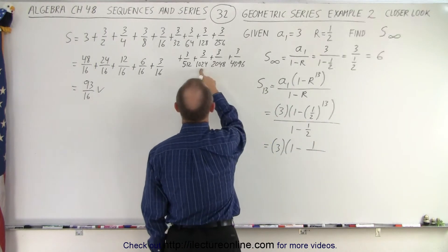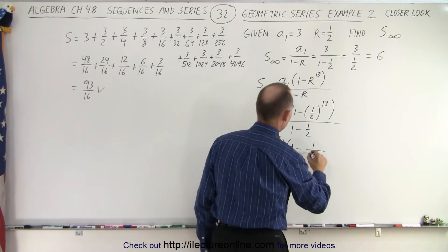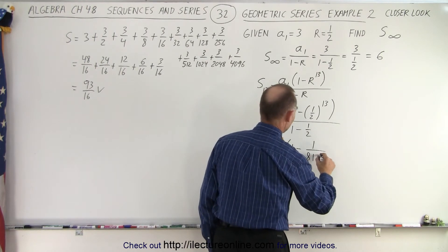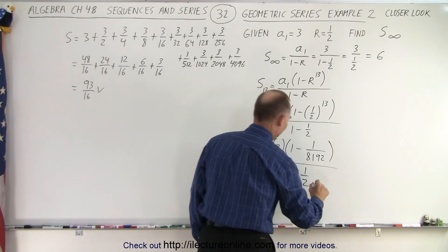Well that's 2 to the 10th, 2 to the 11th, 2 to the 12th. 2 to the 13th would be 8,192. All divided by 1 minus 1 half which is 1 half. Alright.